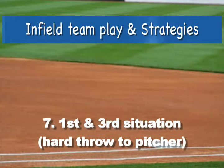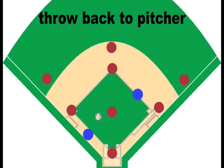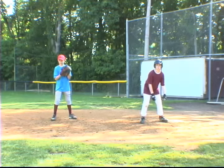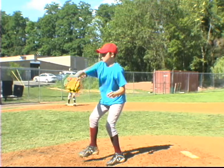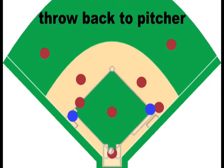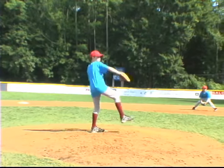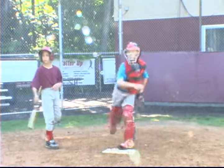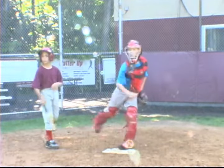Play seven: first and third, hard throw to pitcher. On this first and third steal situation, the catcher throws the ball hard back to the pitcher. The pitcher can do a few things: one is to turn quickly to third and throw to catch the base runner leading too much. Another strategy is to turn toward third quickly, freezing the runner, then turn to second and throw the base runner out. Remember, on any first and third situation where the runner is tagged out going from first to second, the fielder making the tag must pop up quickly, ready to throw the ball home to get the lead runner out.